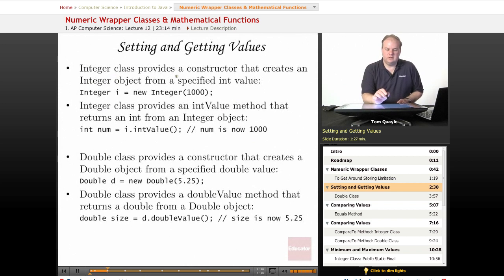So how do we work with these Numeric Wrapper Classes? The Integer class provides a constructor that creates an Integer object from a specified int value. We use the class name Integer, we provide a variable name, in this case i, and then we call the constructor via new, the constructor of the Integer class, and we pass in an int value that we want to have an object created that has that corresponding integer value. So this would create an Integer object with a numeric value of 1000 and assign it back to the variable i.